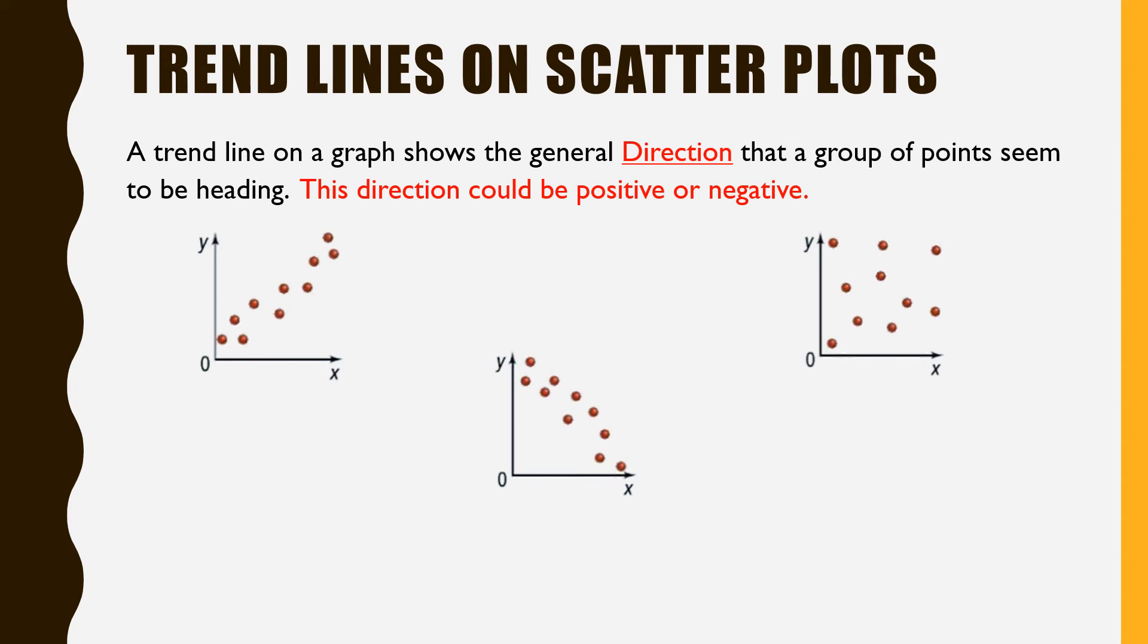So trend lines on scatter plots. A trend line on a graph shows the general direction that group of points seem to be heading. This direction could be positive or negative. Here in this example, it's positive because it's going upwards. This would be a strong correlation. This one is negative because it's going in a downward direction. And this also would be a strong correlation.